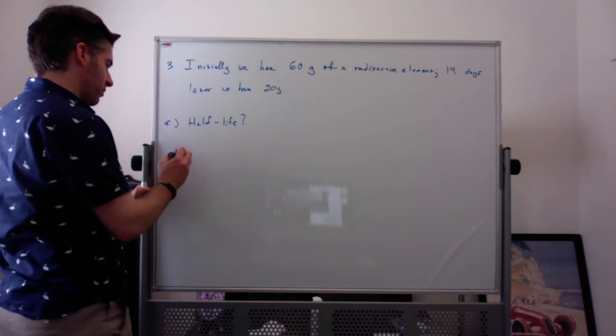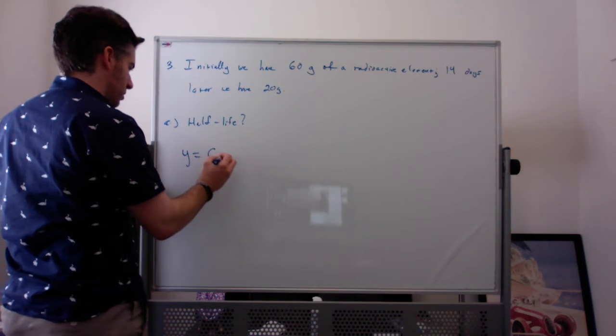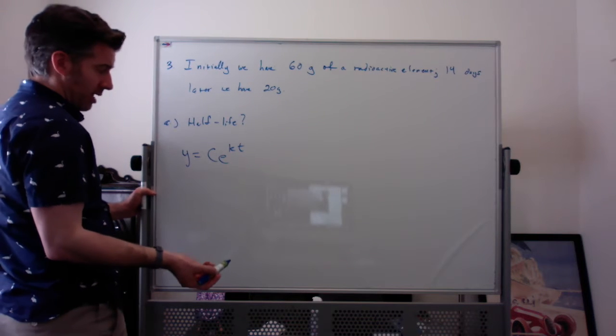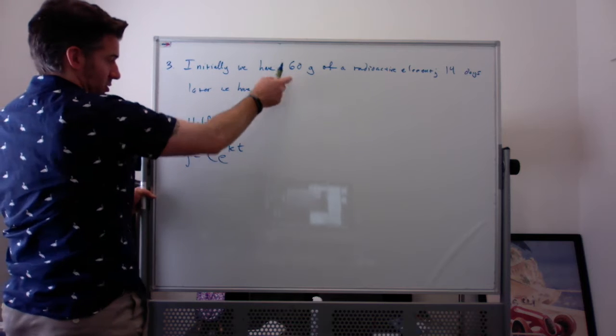To find the half-life, we're going to set up the usual model, y equals c e^(kt) for exponential growth or decay, and then we're going to say, well, c is 60 because that's what we're starting with.